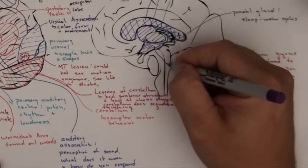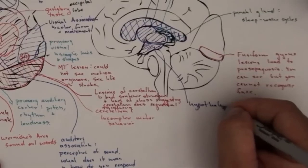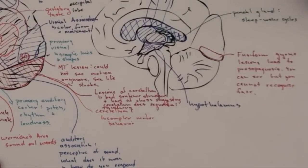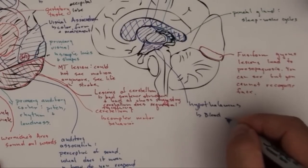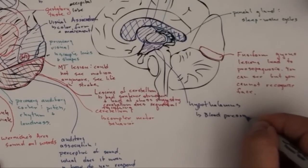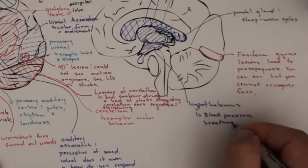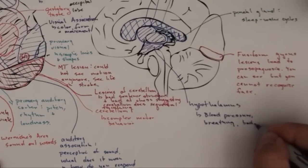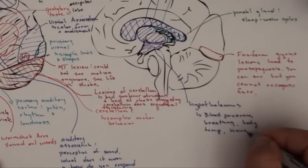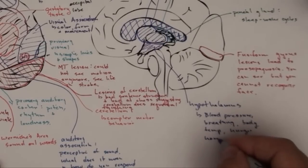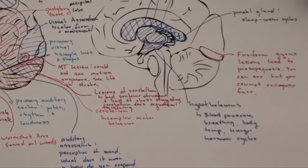This right here is called the hypothalamus. The hypothalamus is responsible for things like blood pressure. Not completely responsible, but it has a hand in these processes. Breathing, body temp, hunger, hormone cycles.